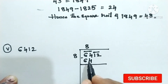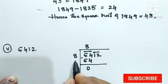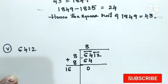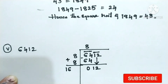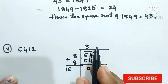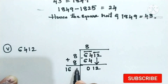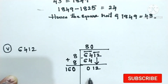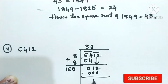Subtract 64 minus 64, which equals 0. Now double 8: 8 plus 8 is 16. Bring down the next group, which is 12. If you take 1 after 16, it becomes 161. But 161 into 1 is greater, so take 160 into 0, giving 0. The remainder is 12.